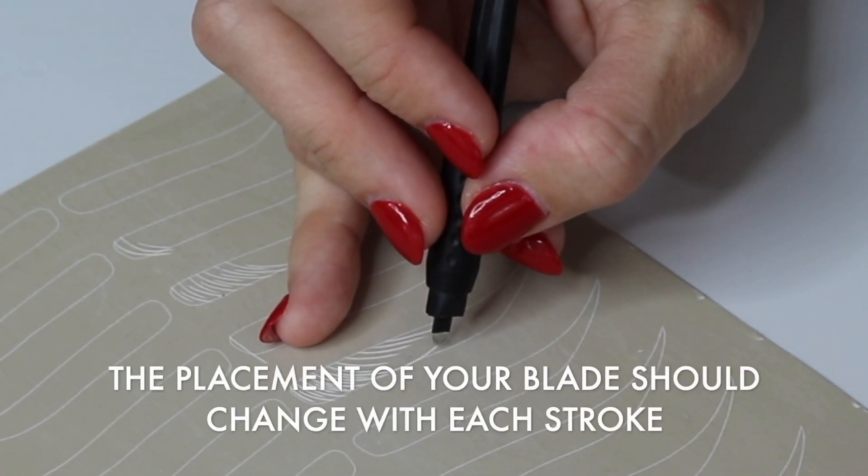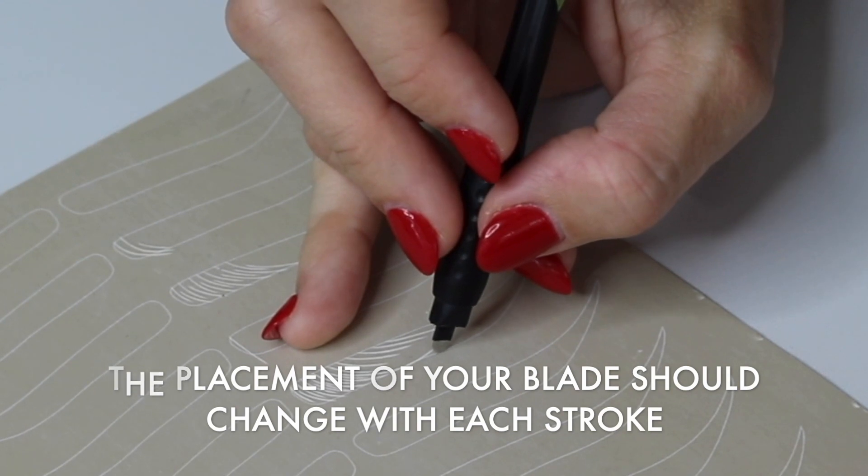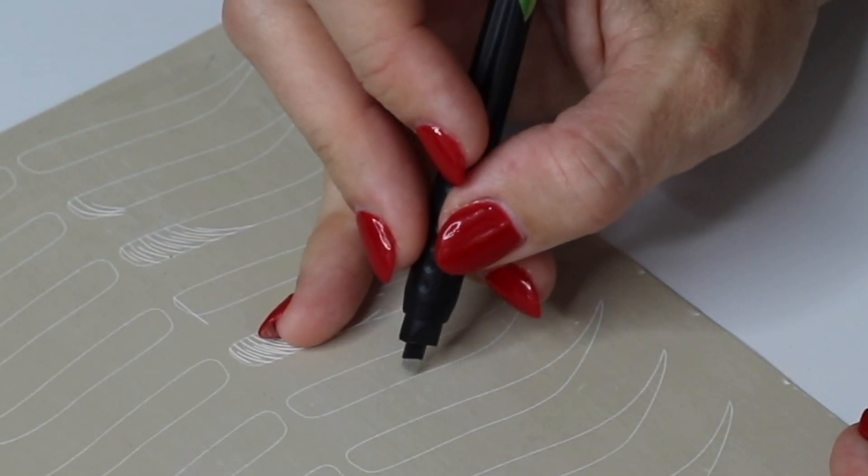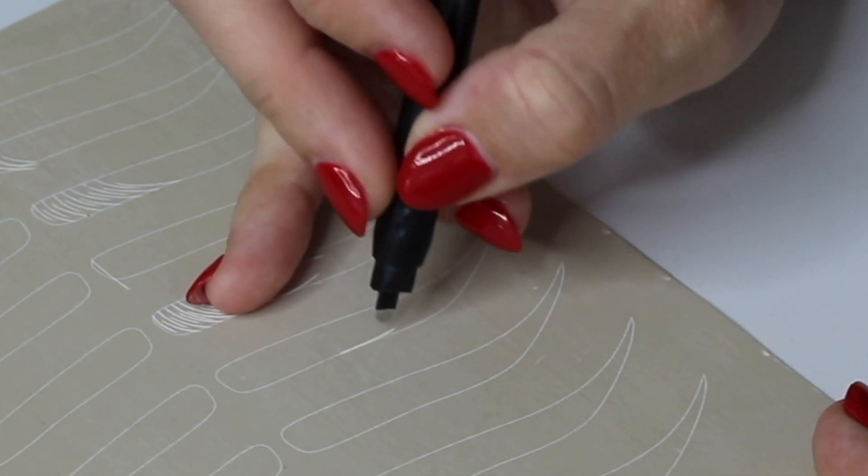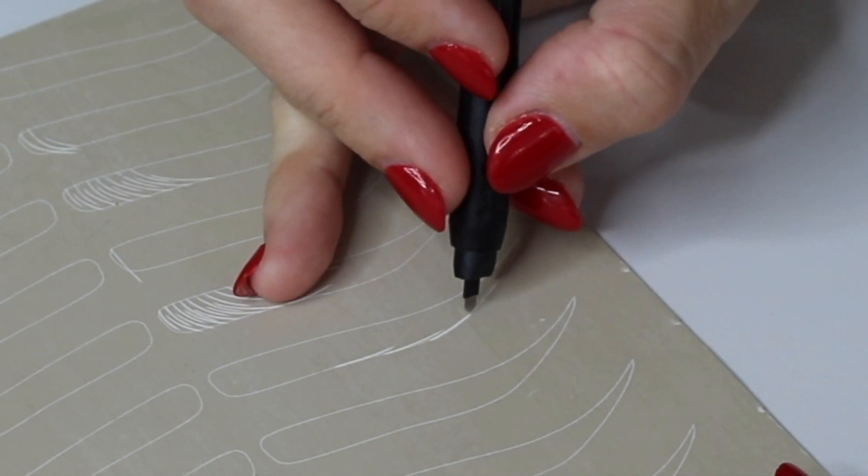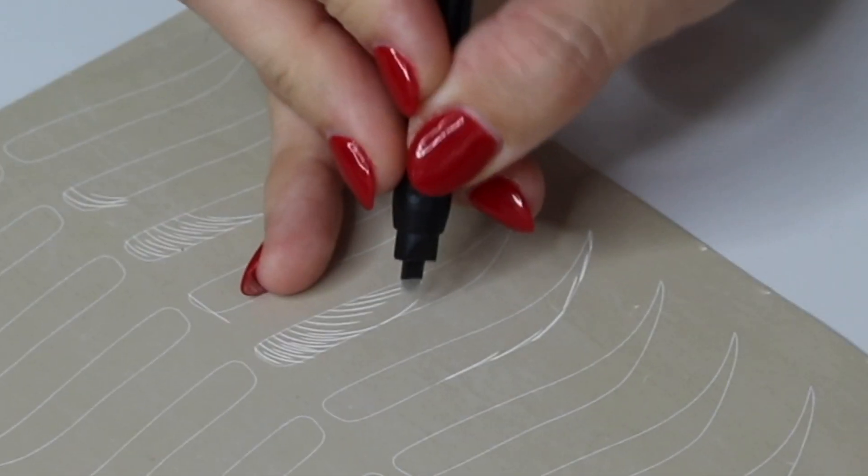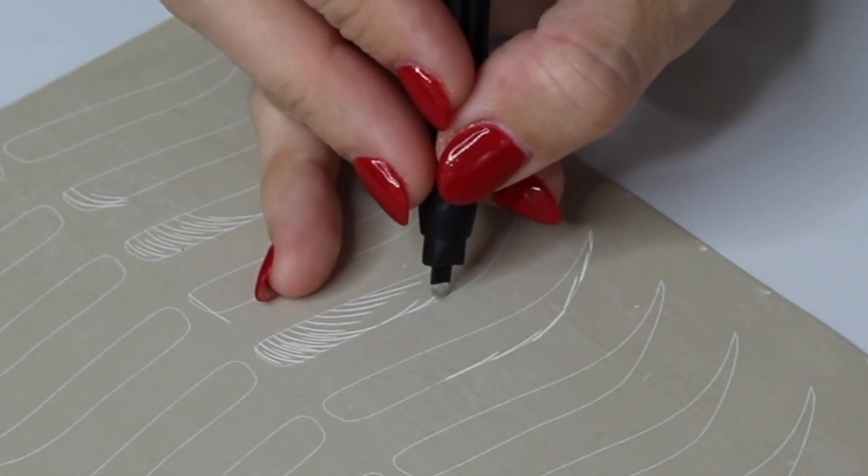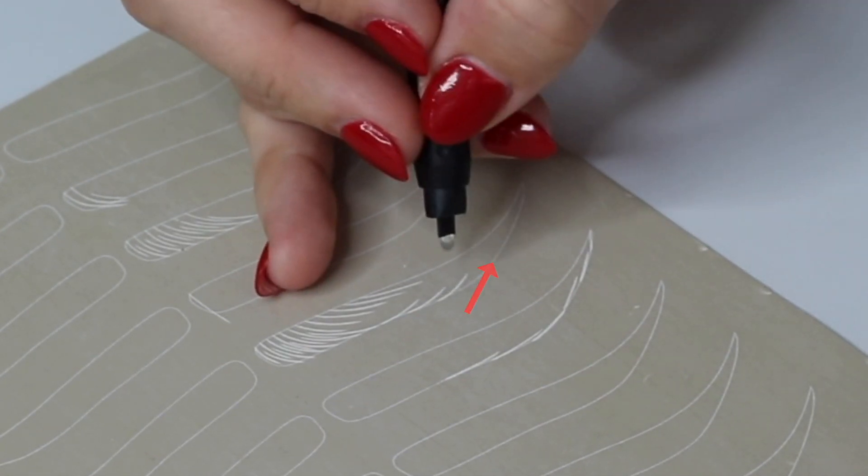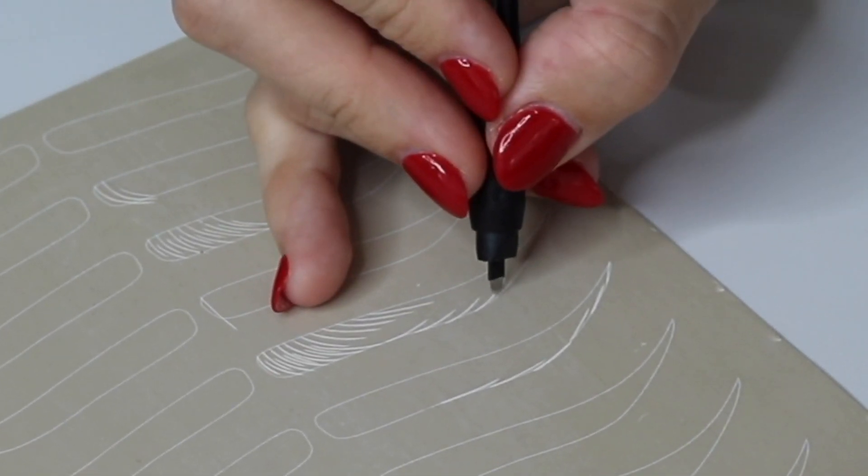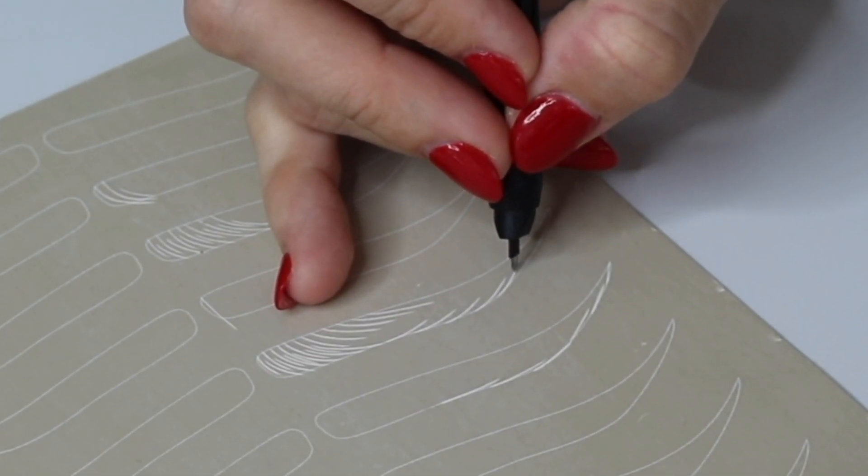But again it just goes back to the direction of my blade. If I keep my blade perfectly on that line what I'm going to end up with is going to look more like stitches like this instead of a natural looking eyebrow. So pay attention to the direction of your blade where you want your stroke to go and that is where your blade should start.